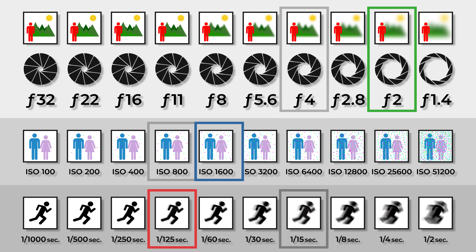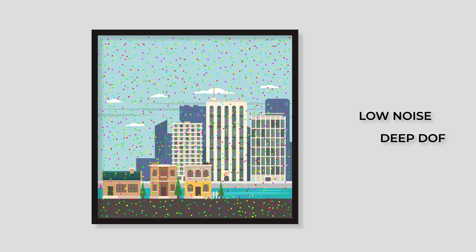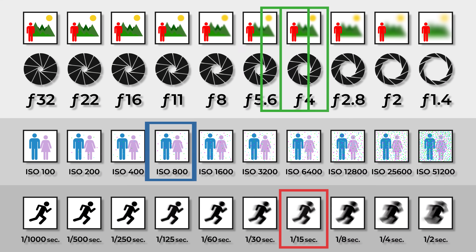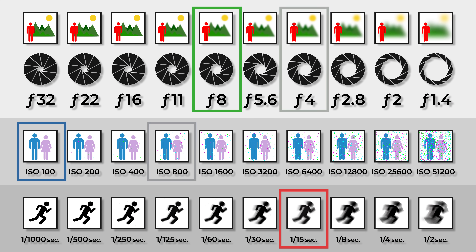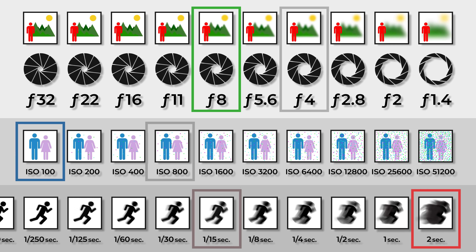It's important to note that this is only one situation. If I was shooting a landscape and wanted low noise and high depth of field, forcing me to change my aperture to f8 and my ISO to 100, I would need to compensate the five-stop reduction in light with the shutter speed, causing me to expose for two whole seconds to maintain proper image brightness.